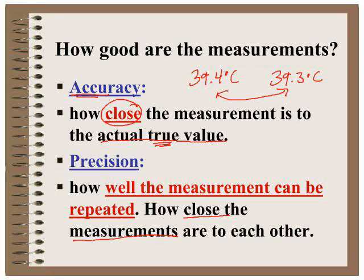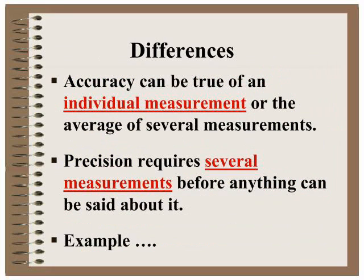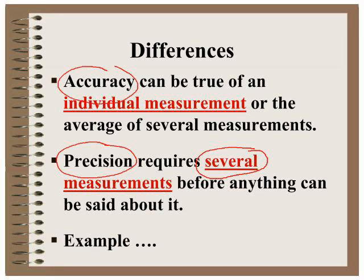So let's go back to our example. Let's say you did a second experiment and got 39.4 degrees Celsius and 39.3 degrees Celsius again. This data, because these values are close to each other is precise and it also happens to be accurate. Again, accuracy can be true of individual measurements, but precision requires that you have several measurements before you can say anything about it. And in science we always try and do several trials so that we can make sure that we are precise as well as accurate.